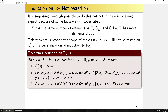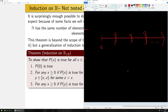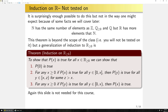Beyond R, extending to the complex numbers C causes the notion of a 'successor' to break down, though it is technically possible by replacing intervals with open circles. But we're not going there. This is all beyond the scope of the class. Now let's talk about induction with parameters — a more practical and examinable extension.